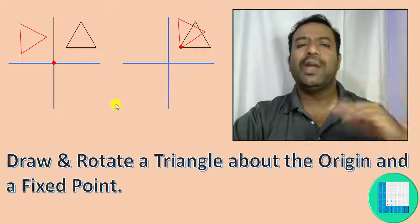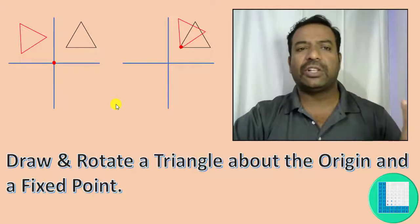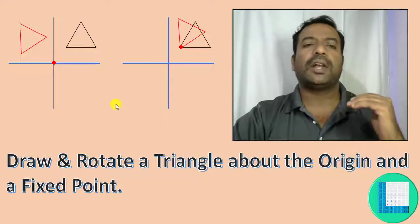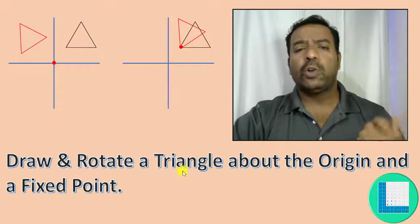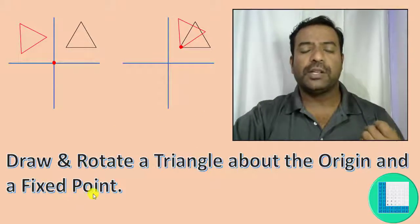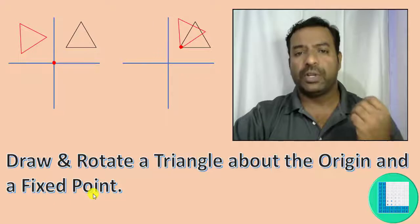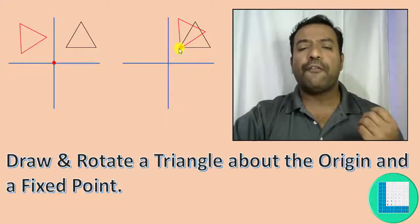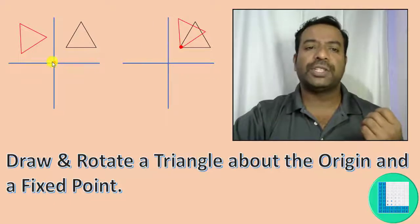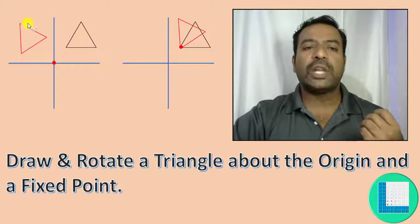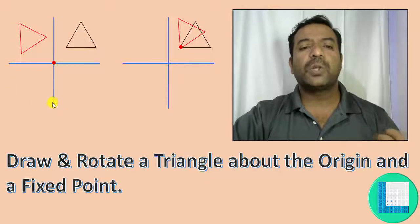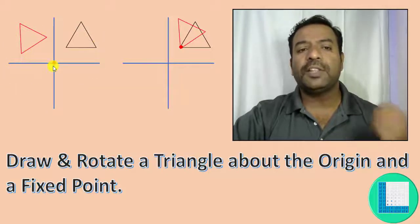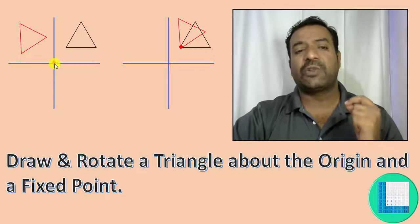By default you need not do any additional logic or technique. If we just call the rotation function it is going to rotate the triangle with respect to the origin. Whatever rotation we apply is going to be with respect to the origin as the rotational point.